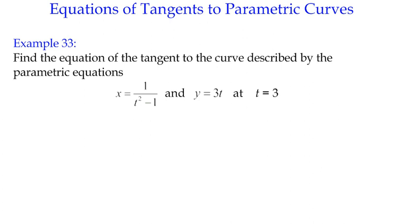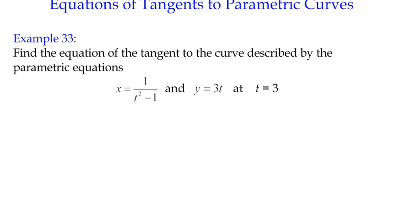This is example 33 in the differentiation topic. The past few examples we've been looking at parametric functions and how we can differentiate them, which means we can then take that extra step of applying the derivative to find a gradient rule — allowing us to find things like the equation of a tangent to a curve. To find the equation of the tangent, we need a gradient and we need a point, so we're going to have to generate a point of tangency and the gradient of the curve at that point.